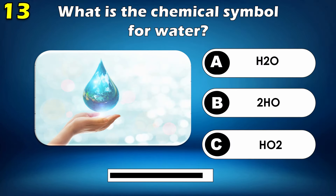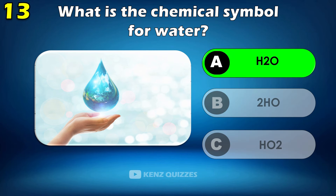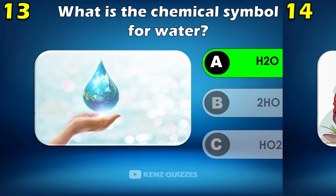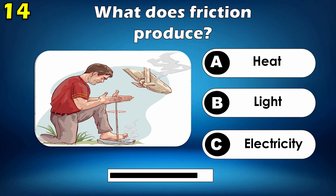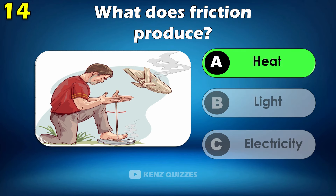What is the chemical symbol for water? H2O. What does friction produce? Heat.